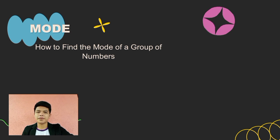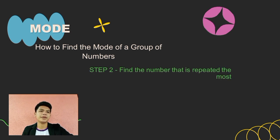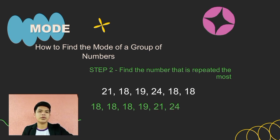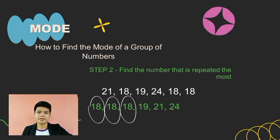The next step is to find the number that is repeated the most. In the arranged numbers, what is the number that is repeated the most? We have 18, 18, 18 — 18 appears three times. So our mode here is the number 18.